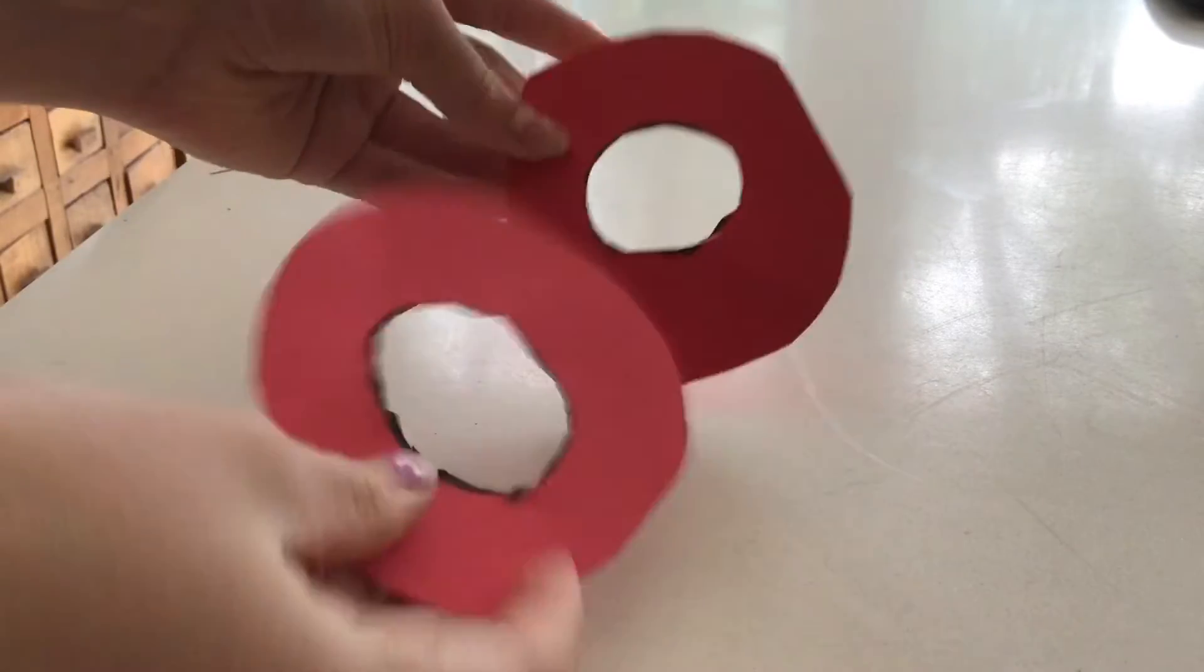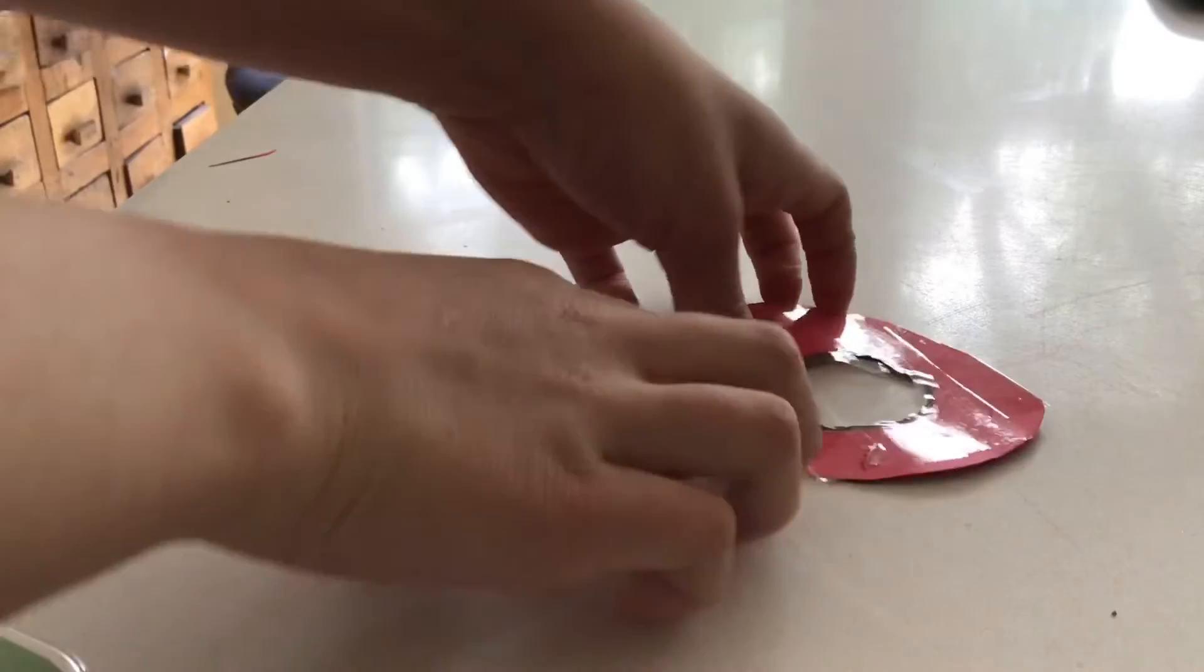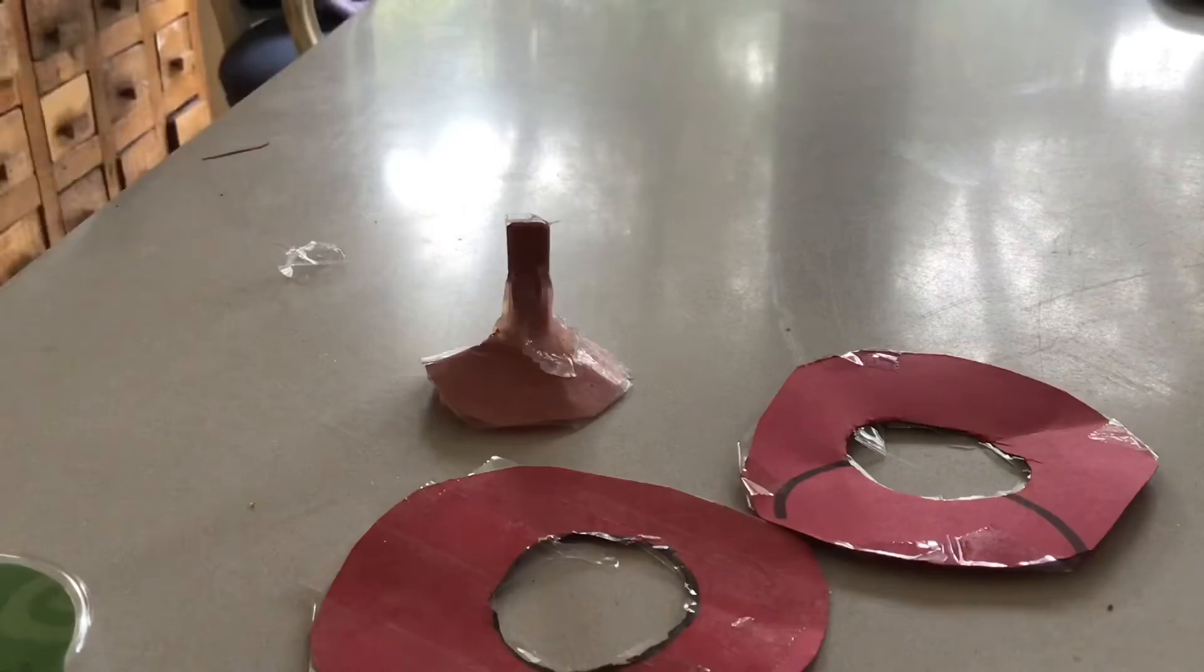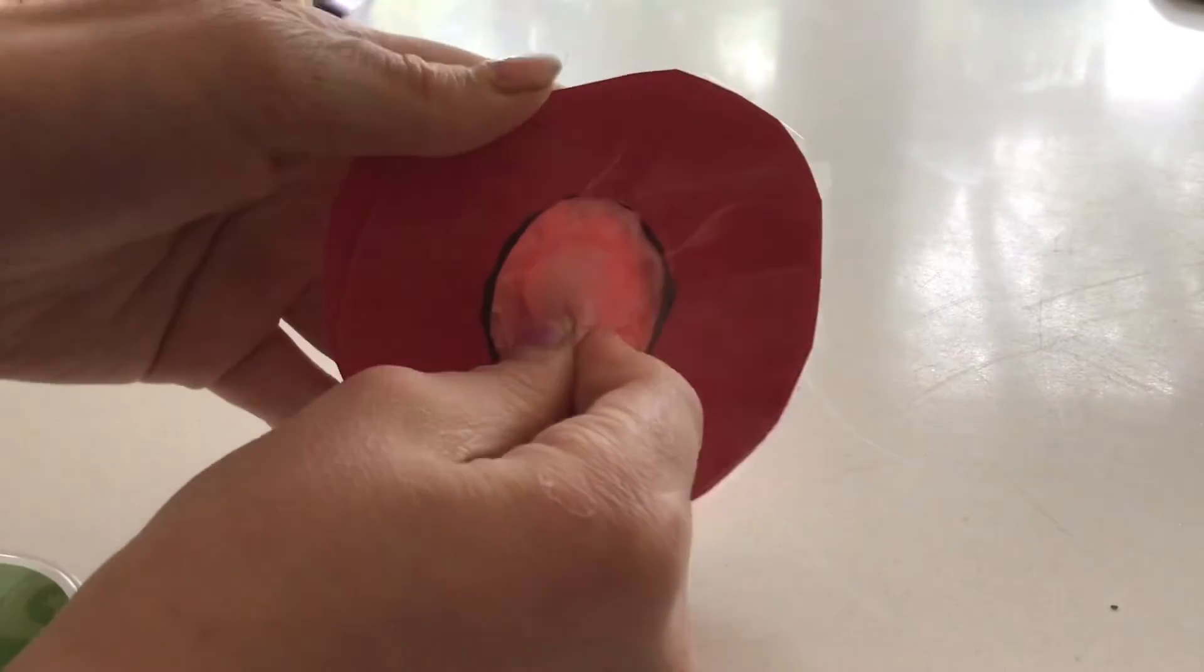Then you're going to want to cover both of the cardboard pieces with tape so they're shiny. Then glue all the pieces together, like this.